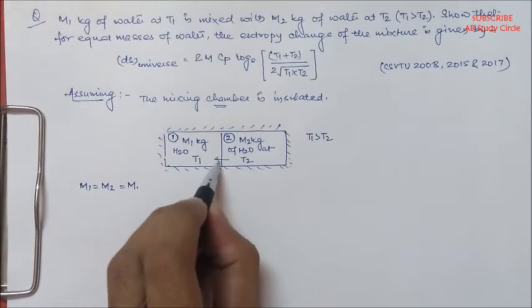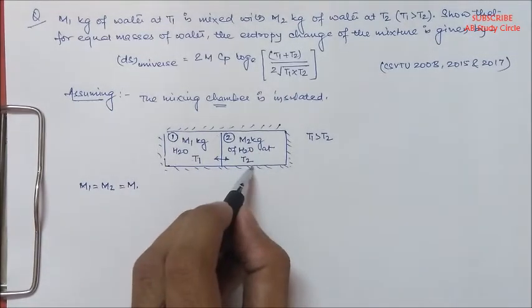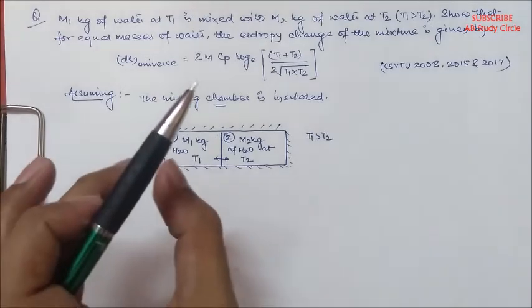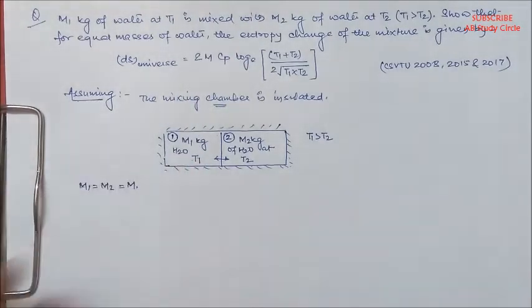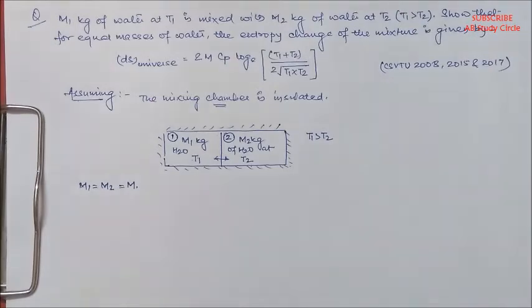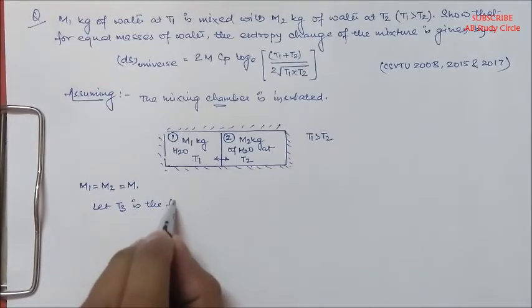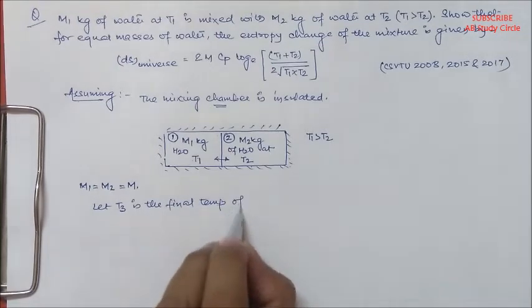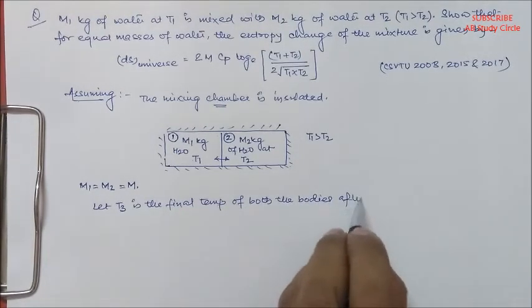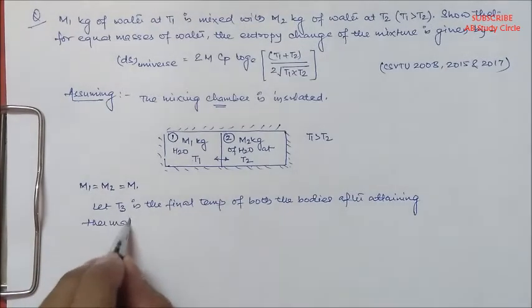When they mix, the body with higher temperature loses some heat, which is gained by the body having a lower temperature, in order to attain thermal equilibrium and reach a particular final temperature. Both the bodies will have the same temperature after attaining thermal equilibrium. Let T3 be the final temperature of both the bodies after attaining thermal equilibrium.